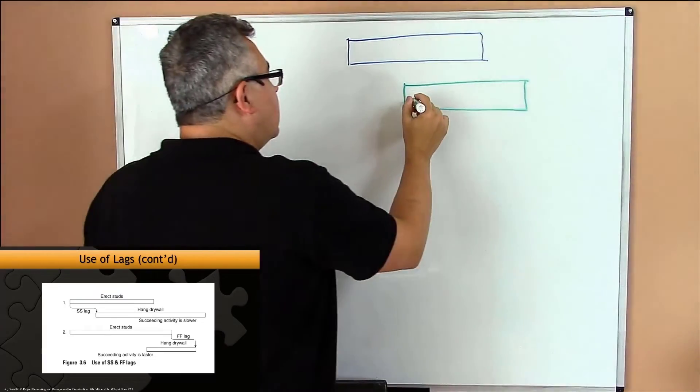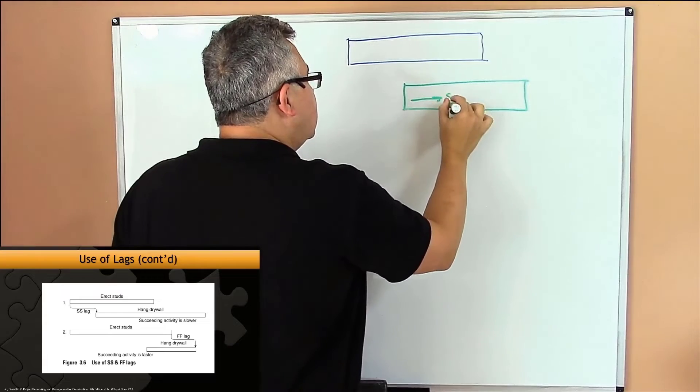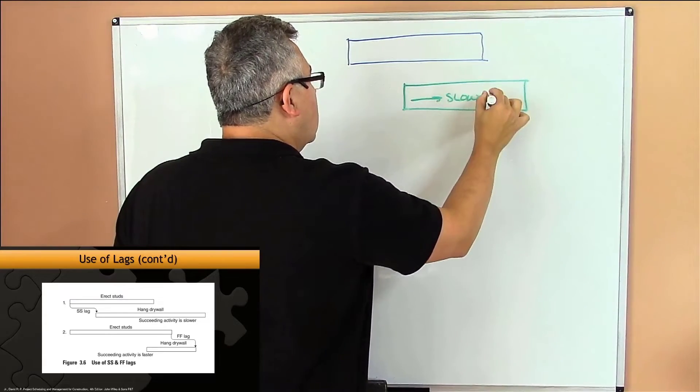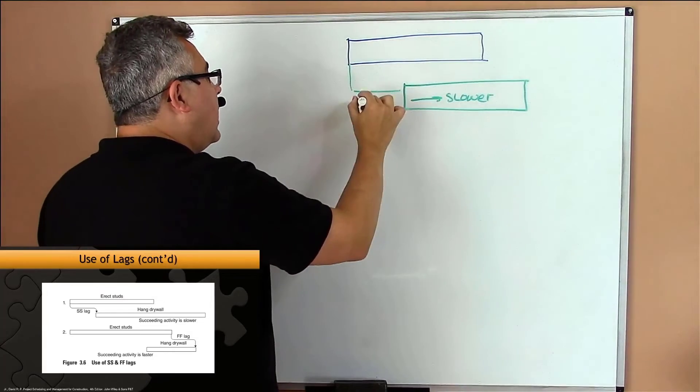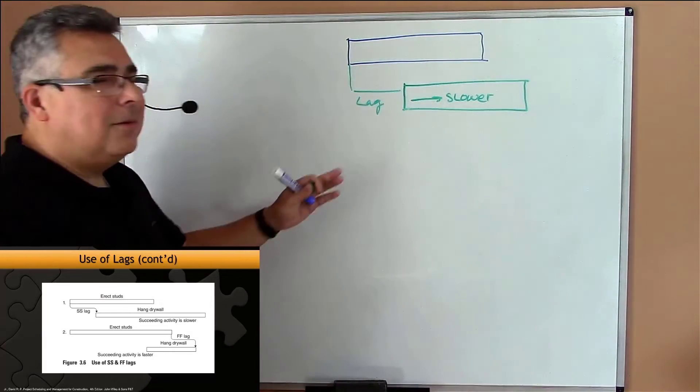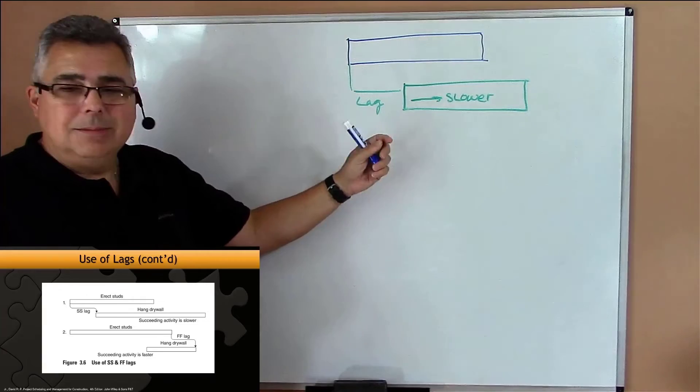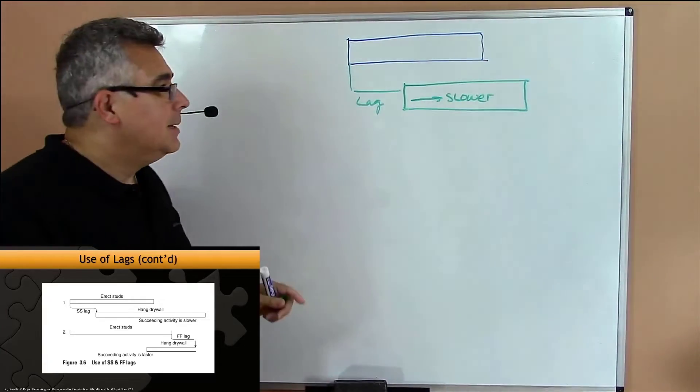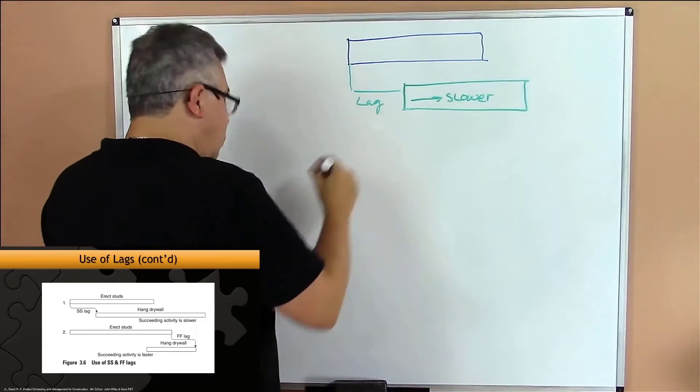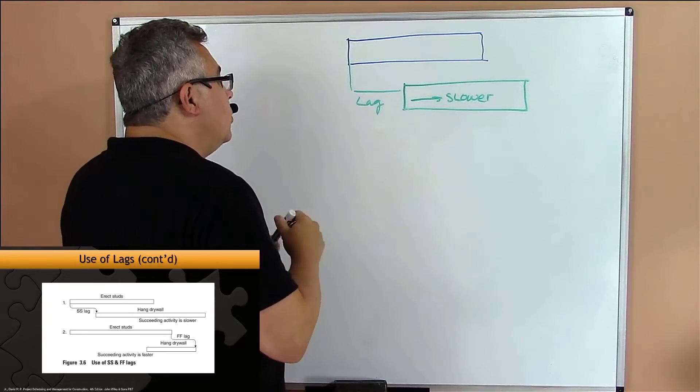If green is slower than blue, if you put a lag at the beginning, you know that that activity, no matter what, will finish after the first one. But if I have a situation in which the second activity is faster - faster - that is very problematic.